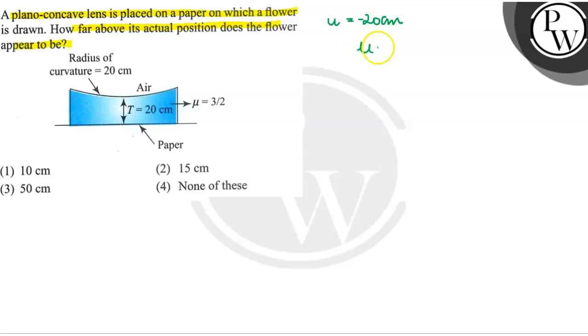And the refractive index is mu1 which is 3 by 2, and mu2 is 1. And the radius of curvature is given here, 20 cm, plus 20 cm. So here we have a lens formula.